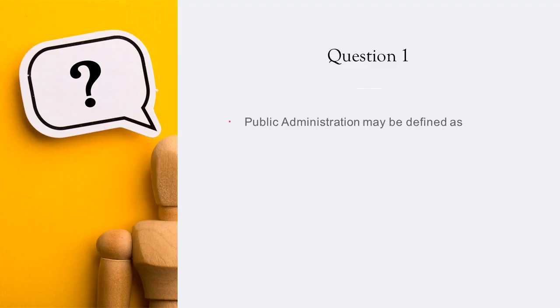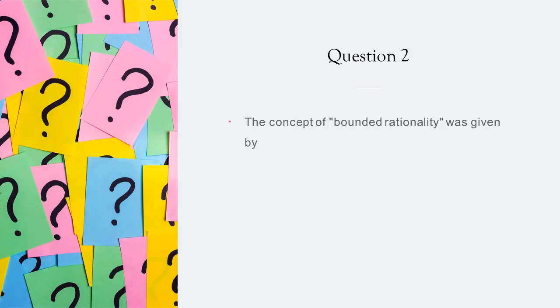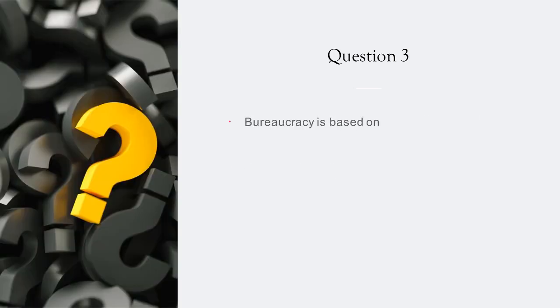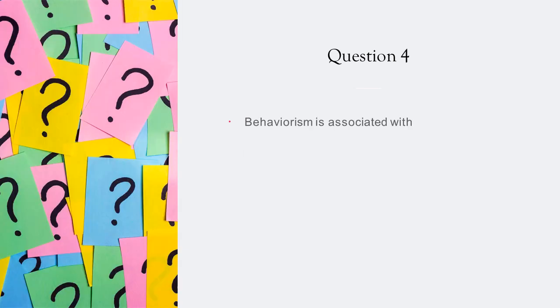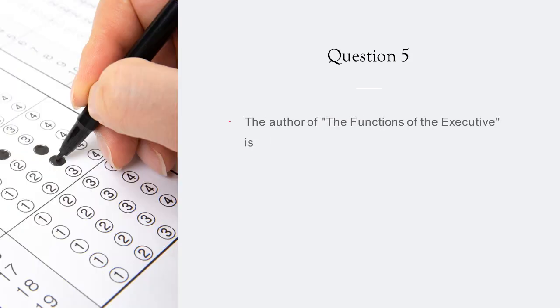Question 1: Public administration may be defined as administration of public. The concept of bounded rationality was given by Herbert Simon. Bureaucracy is based on traditional authority. Behaviorism is associated with rationalism. The author of The Functions of the Executive is Chester Bernard.